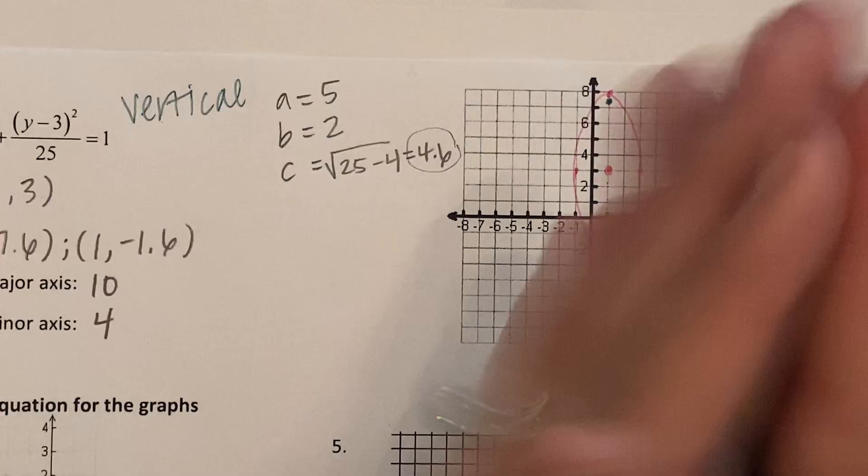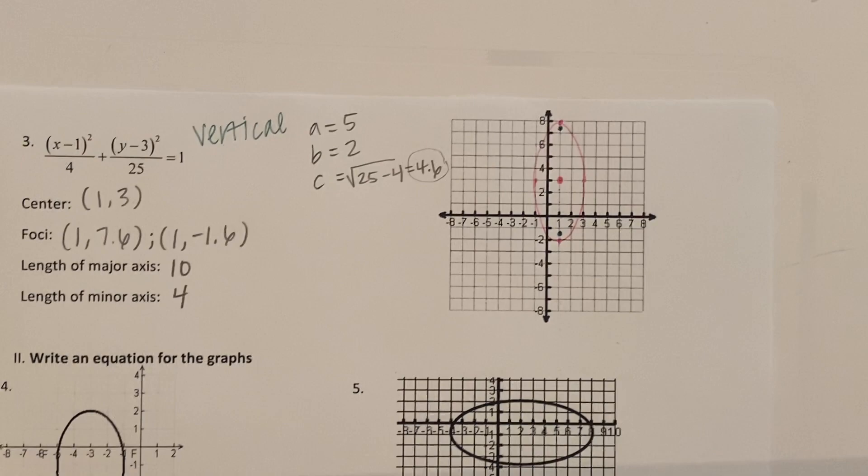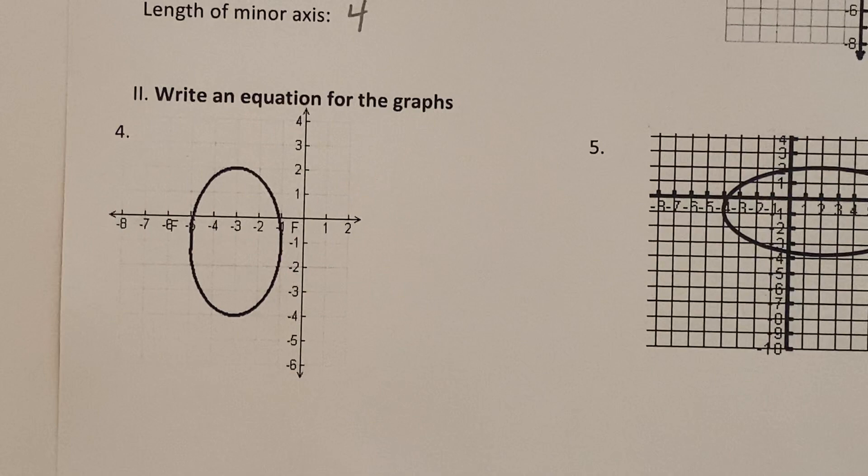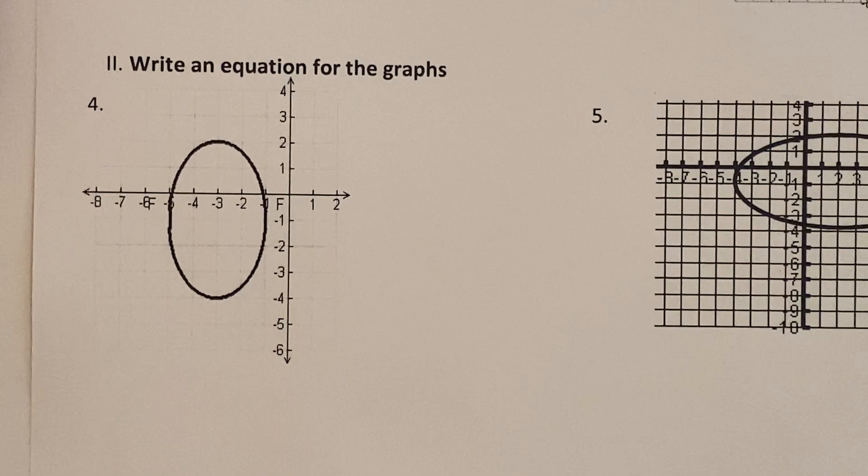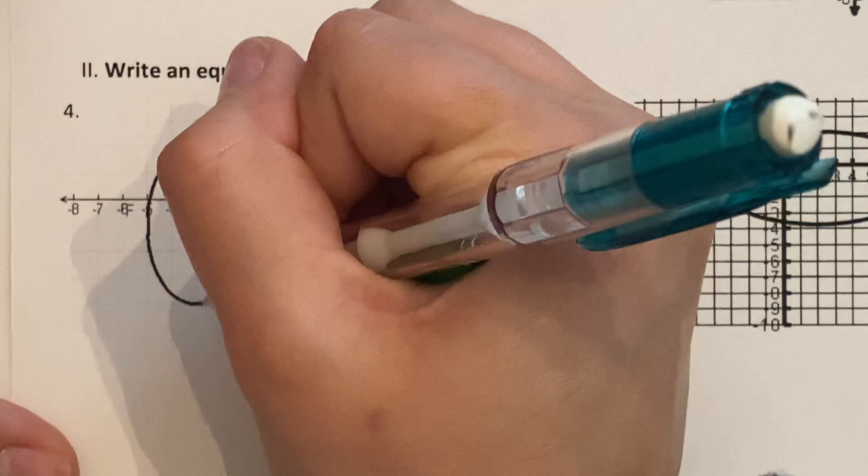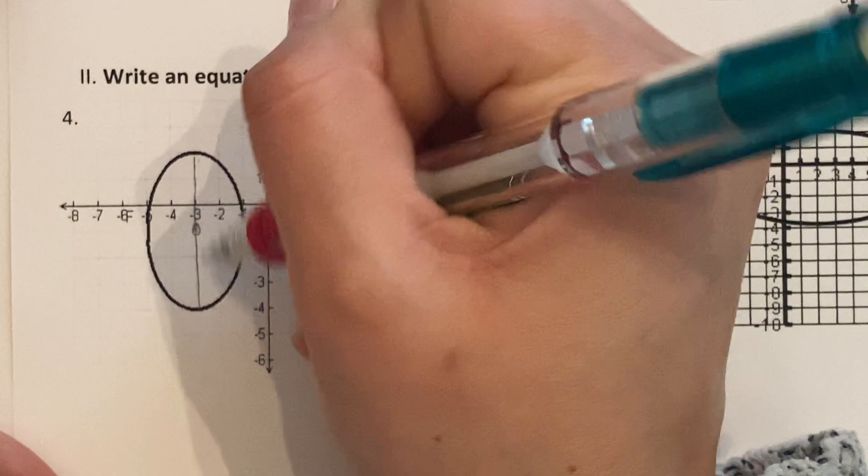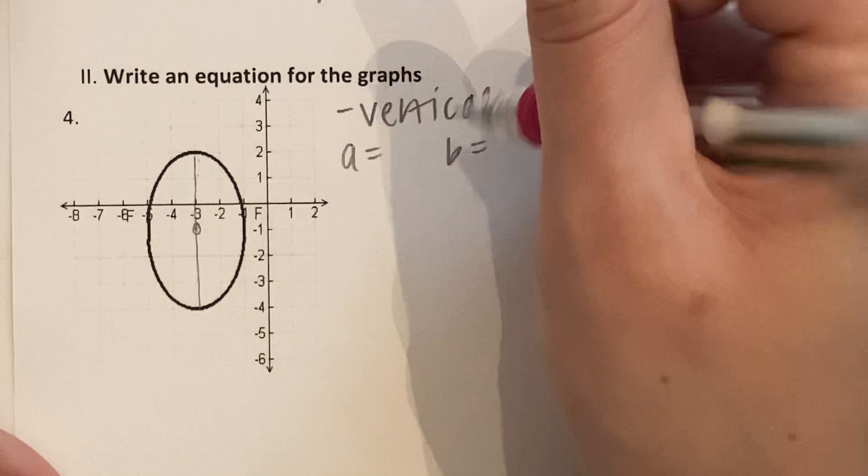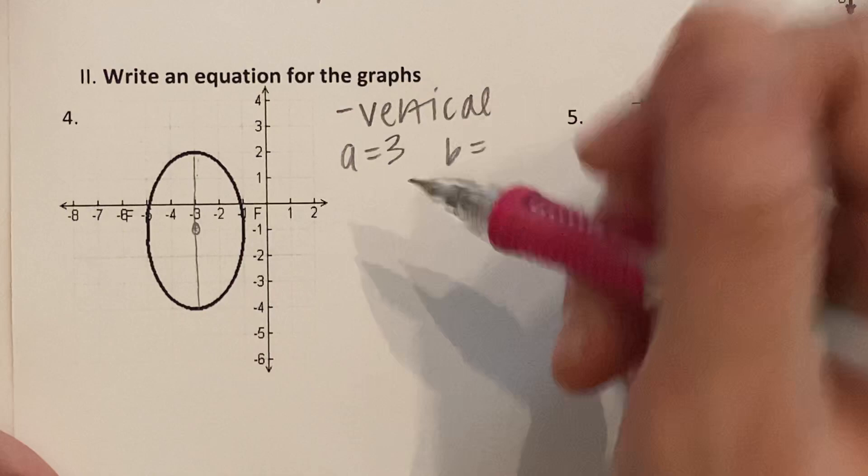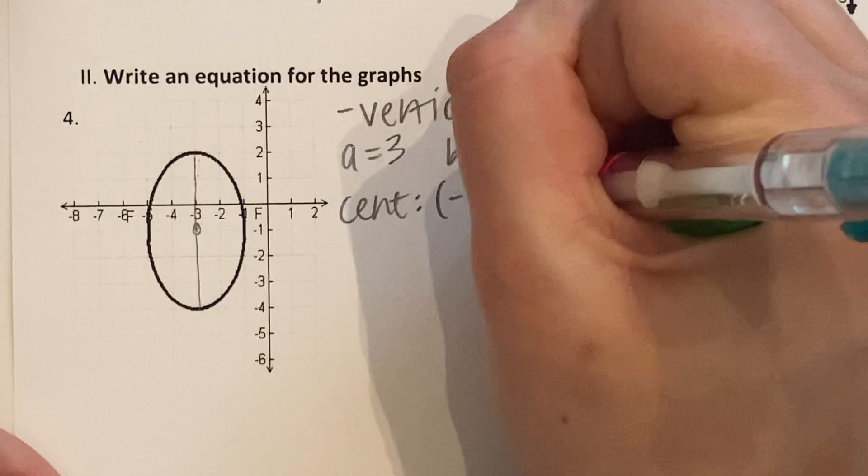Okay. So that was graphing. Now let's do it backwards. Let's write the equations. So I gave you a graph. You have to figure out the formula. We're going to do the same exact process that we did for graphing. So first we have to decide vertical or horizontal here. Well, that part's easy. It's longer up and down. So it's vertical. Now let's figure out our A and our B values. So since it's vertical, that means the A value is this up and this down. Remember, not the whole thing, just half of it. So 1, 2, 3. B is the shorter distance. So 1, 2. And now let's figure out the center. That's negative 3, negative 1.